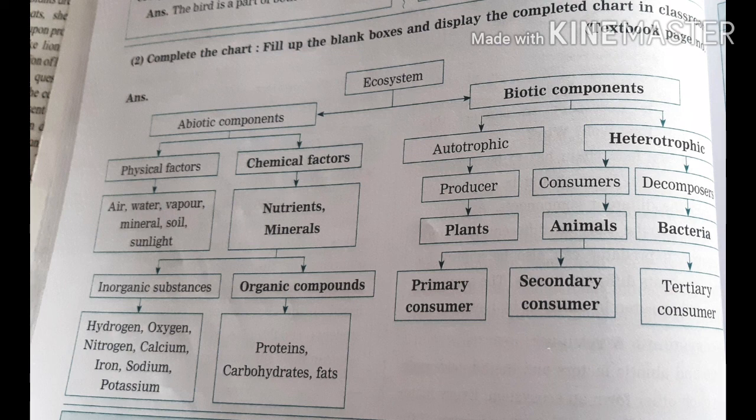Inorganic substances include hydrogen, oxygen, nitrogen, calcium, iron, sodium, potassium, etc. Organic substances are proteins, carbohydrates, fats, etc. The types of biotic components are autotrophic and heterotrophic. Autotrophic producers include plants, etc. Heterotrophic includes consumers and decomposers. Consumers are animals and decomposers include bacteria.